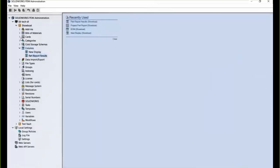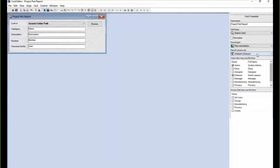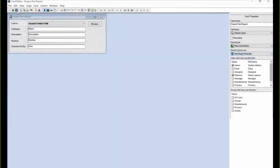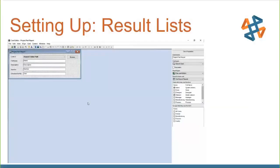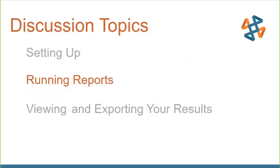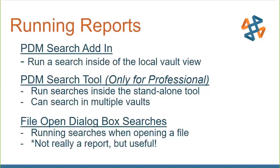Those are really the main things that we need to have set up beforehand. Next is actually running those reports. There are really three ways we can do this: inside the actual search add-in which is a search inside our local vault view; inside an external standalone search tool for PDM Professional that also allows us to search inside multiple vaults; and inside a file open dialog box. The file open dialog box isn't really a report but it is useful — for instance if you have Microsoft Word open and go to File Open, you can utilize our search tool inside there.